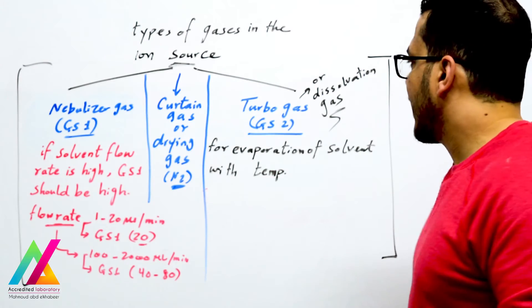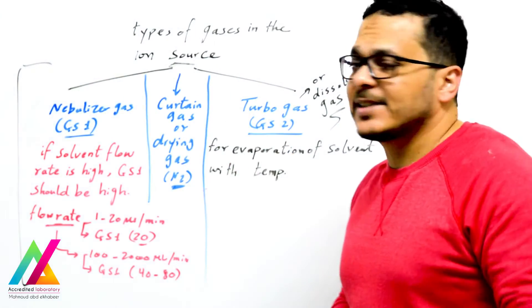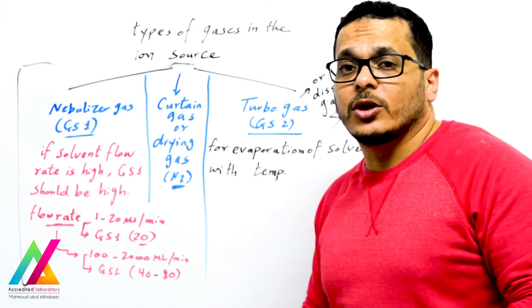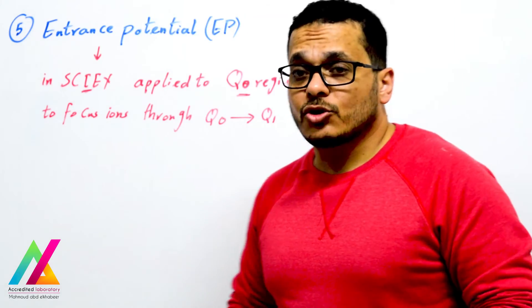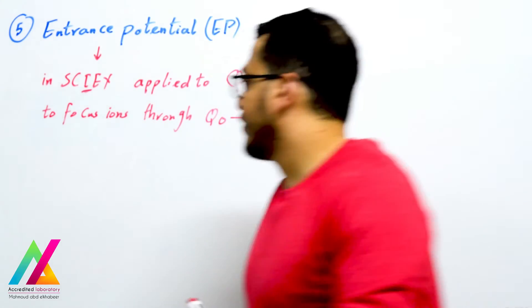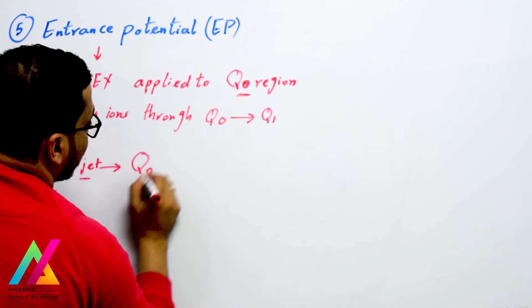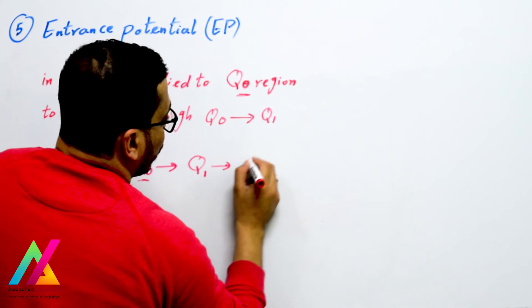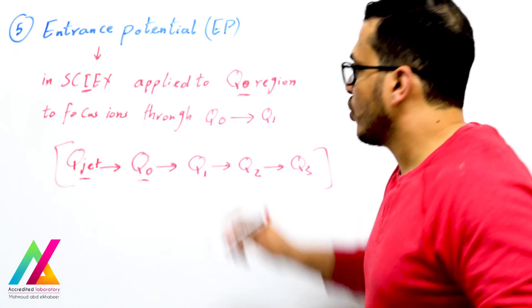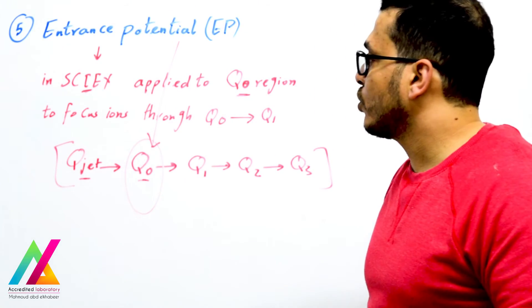Turbo gas or desolvation gas (Gas 2) is used for evaporation of solvent, also aided by temperature. Curtain gas, as discussed, prevents solvent droplets, neutral molecules, and solid particles from entering the mass analyzer. In AB Sciex instruments, there is also an entrance potential applied to the Q0 region. These instruments have a Q0 ion guide before Q1, whereas other instruments have only Q1, Q2, and Q3. The entrance potential is applied to the Q0 region to focus ions through Q0 to Q1. Q1 is a mass filter that selects precursor ions to be transferred to Q2, the collision cell. There is also a potential applied to Q1 called the rod offset, which must also be optimized.